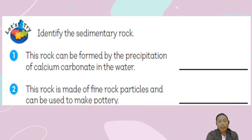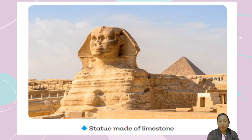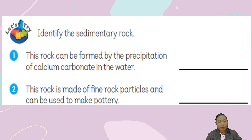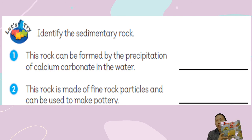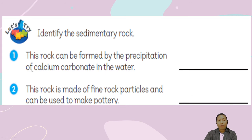Those are the three kinds of sedimentary rocks. Sedimentary rocks can be formed in water or on land. For exercises on sedimentary rocks, please open your textbook to page 97. Identify the sedimentary rock: this rock can be formed by precipitation of calcium carbonate in water. Is it shale, sandstone, or limestone?